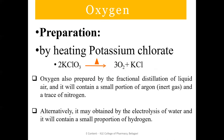Coming to the preparations of Oxygen: first, by heating Potassium Chlorate (2KClO3) under suitable conditions to get 3 moles of O2 plus KCl as a by-product. Second, Oxygen is prepared by fractional distillation of liquid air, which contains a small portion of Argon gas and a trace amount of Nitrogen.